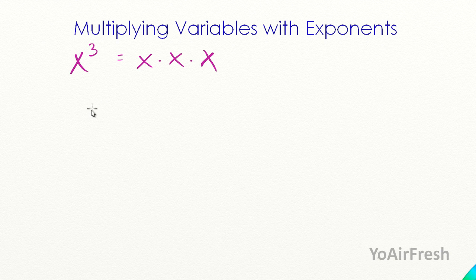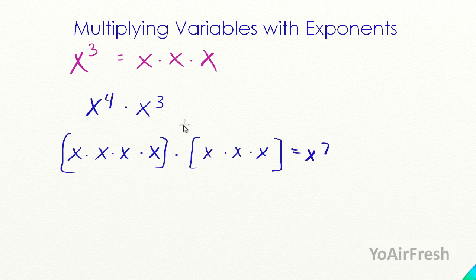So let's say we have x to the fourth times x to the third. And if you wrote this all the way out, you have the four x's here on this side, times another three, and that comes out to, well there's seven there, it'd be x to the seventh. So when multiplying, you can just add the exponents, only if they're the same base also. So if this was an x and a y, you couldn't simplify it any better. So this again is the same, x to the seventh.